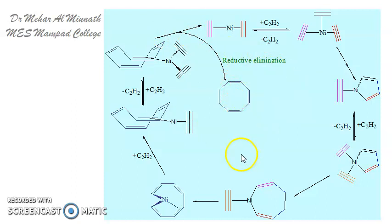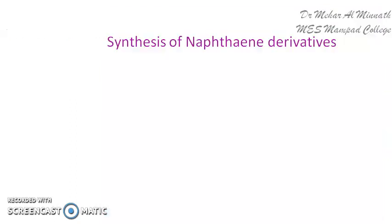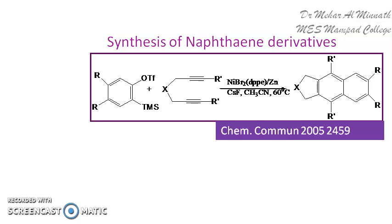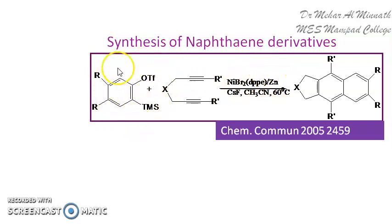So this is the mechanism of REP synthesis. Now coming to another synthesis: the synthesis of a naphthalene derivative. This is a sort of C–C bond formation wherein benzyne is formed. Here you have the nickel compound and the organic compound — this substrate compound gives us the benzyne, and this was published in 2005 in Communications. This is the naphthalene derivative which we get.